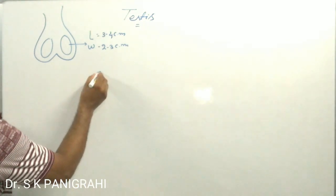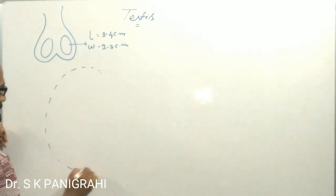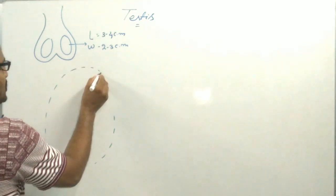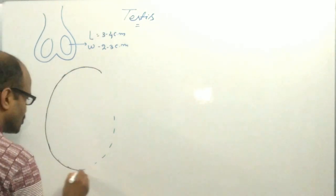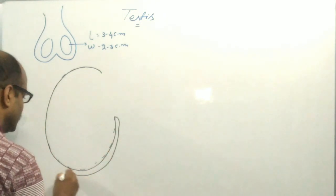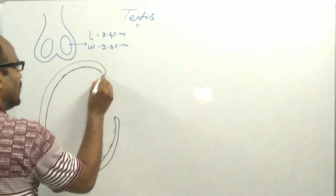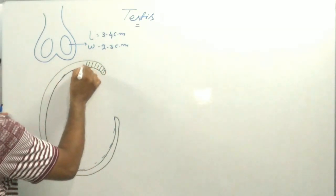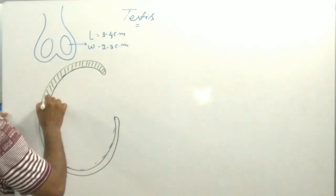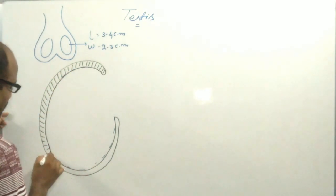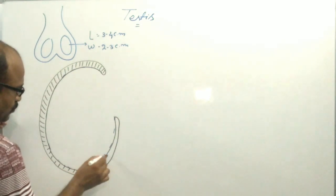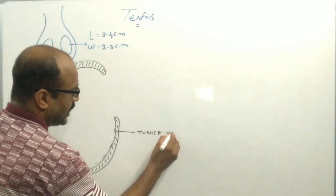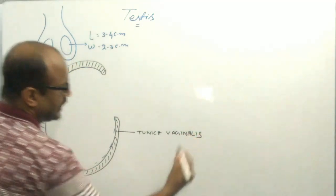This testis has 3 layers. The outer layer is a double-layered structure — this is the layer of peritoneum. The outer layer is the tunica vaginalis, derived from the peritoneum. So this is the double-layered structure: tunica vaginalis.